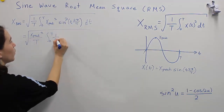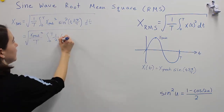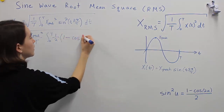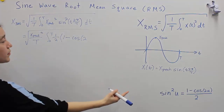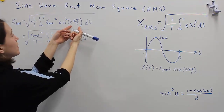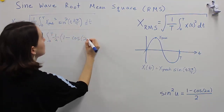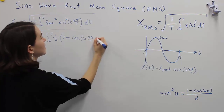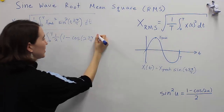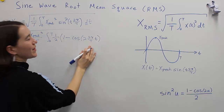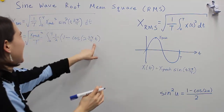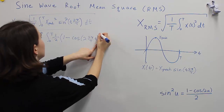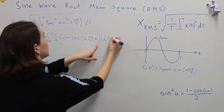Moving the 1/2 to the front, we'll multiply all that by 1 minus cosine of 2u, where u in this case is the expression 2 times 2π over T. Note the distinction between big T and little t. This gives us the proper expression, and now we're going to take the integral of that.